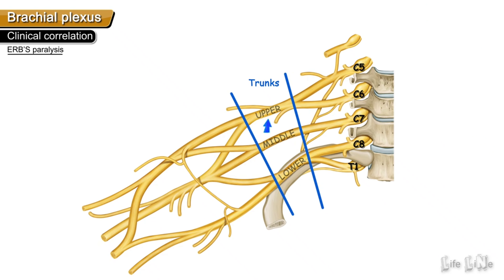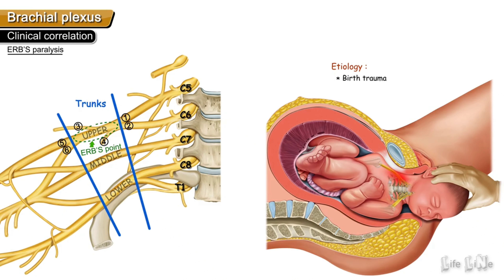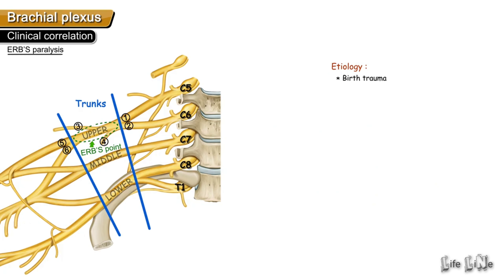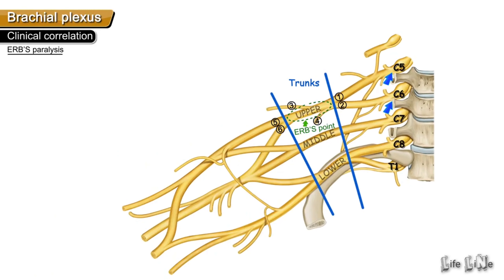Erb's paralysis is damage to the upper trunk of the brachial plexus, formed by C5 and C6 roots. Erb's point is an area on the upper trunk where about six nerves meet. Injury to this upper trunk leads to Erb's paralysis, typically occurring as a birth trauma when there is undue abduction of the head, neck, and shoulder during delivery, or due to a fall on the shoulder in road traffic accidents.